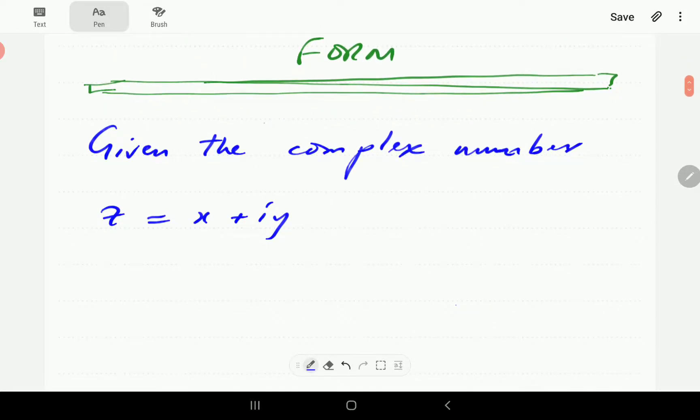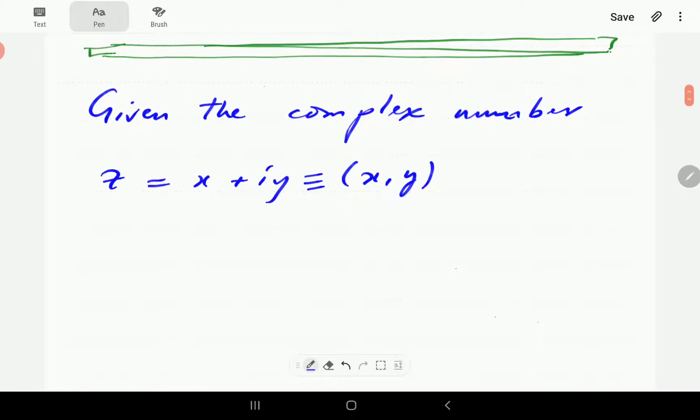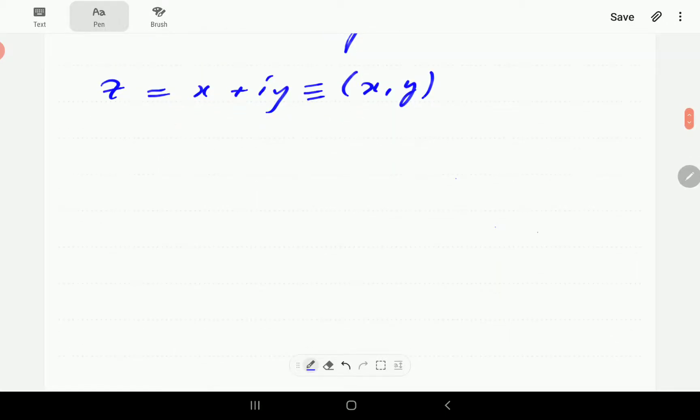So we've already seen that if we've got a complex number z equals x plus iy, then this corresponds to the point (x,y) on the Argand diagram. And so in fact we can plot it as follows.